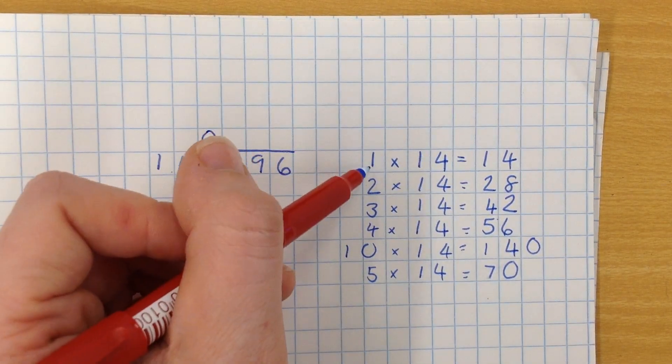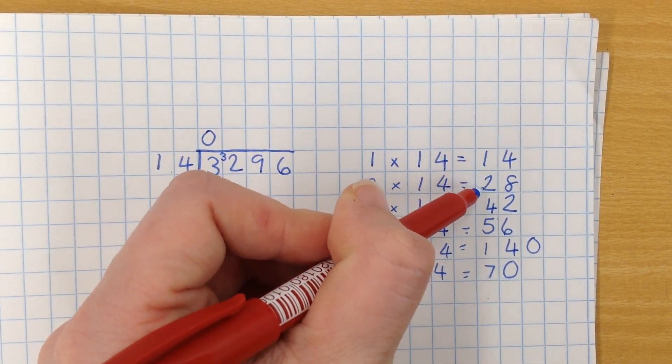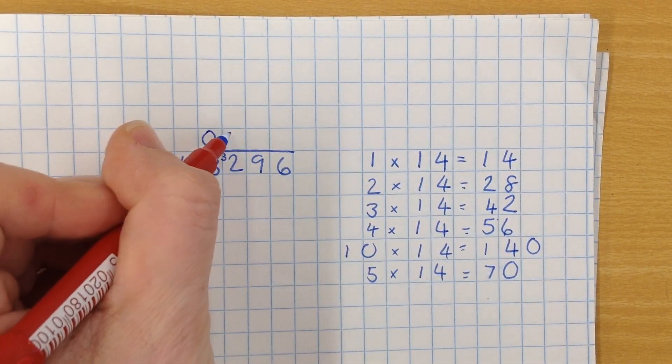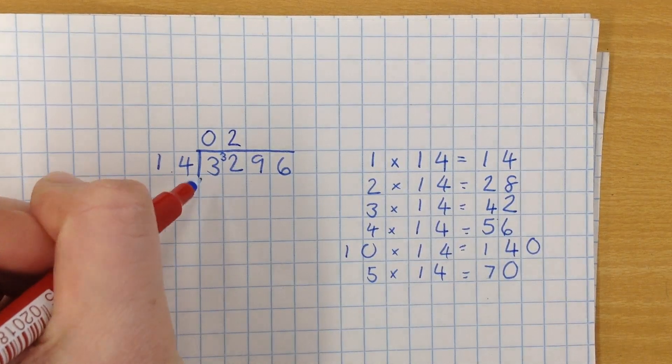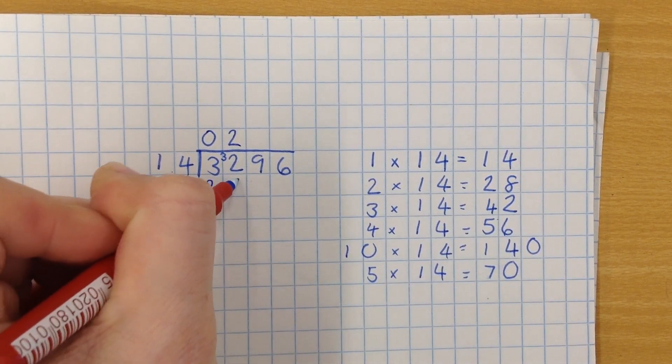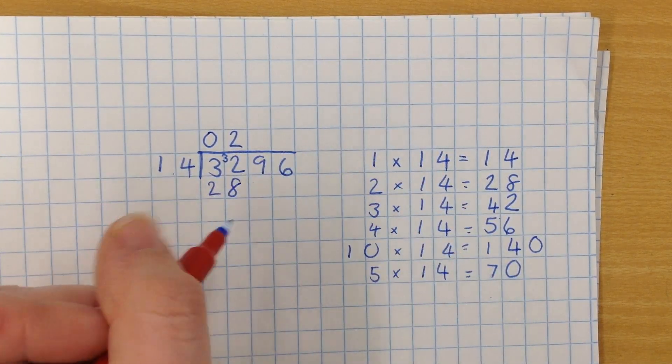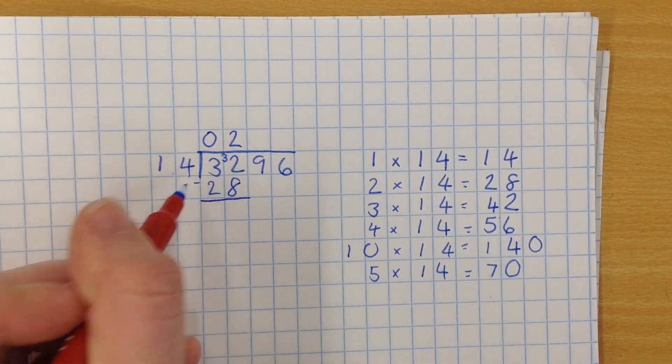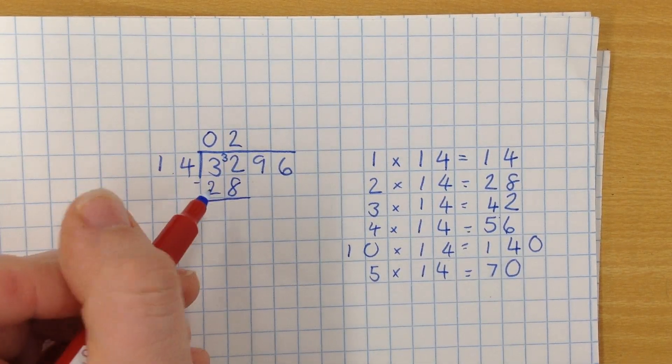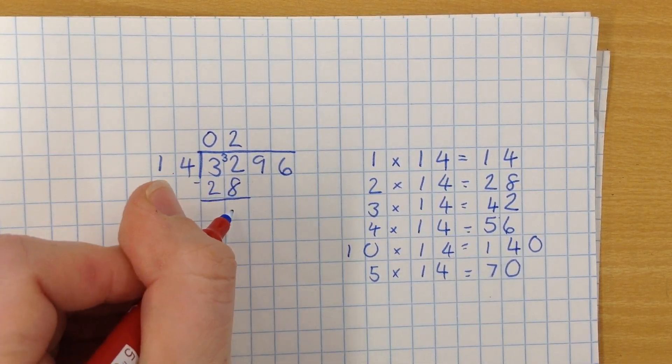Now, 14, I can look across here, goes into 32 twice. So I'm going to put my 2 up here because that's part of my answer, and then I'm going to put the 28 because that's the maximum number of times that 14 goes into 32 underneath, and I'm going to take it away. It's a little bit like chunking in this method, and that gives me 4.